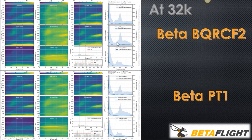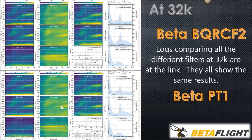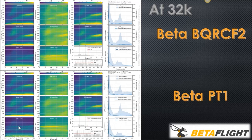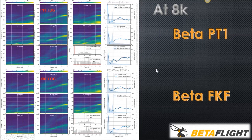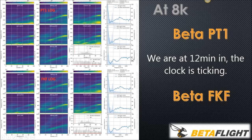Here are two graphs at 32K showing BQRC vs. PT-1 — you can look at it yourself. Here's the raw, which is much more yellow because it's 32K versus 8K. Here's the filtered, the D-term, the transmission percentage, and so on. You can barely tell the difference between the two graphs. The next slide is the Betaflight PT-1 filter versus the Betaflight FKF filter — same thing for noise attenuation. There's a little bit less raw noise on one versus the other, so you'd expect to see that same dimness carry through.